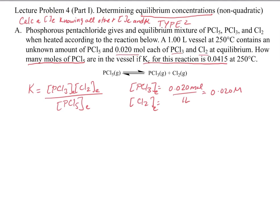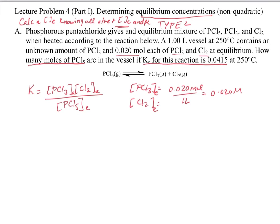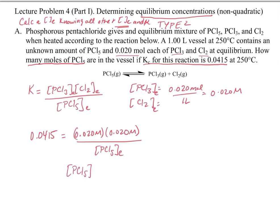At this stage we have everything we need to get the equilibrium concentration of PCl5. We're given equilibrium concentrations. In the next example, what will differentiate it is we're not given equilibrium concentrations but initial concentrations — that requires an ICE table. Let's plug into our K equation: 0.0415 equals 0.020 molar times 0.020 molar divided by the concentration of PCl5 at equilibrium, which we don't know. Reorganizing, the concentration of PCl5 equals 0.00964 moles per liter.